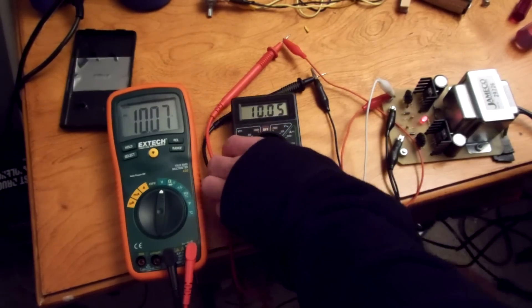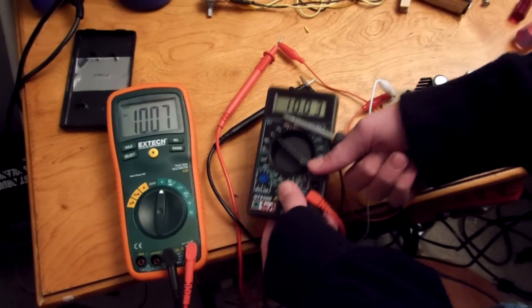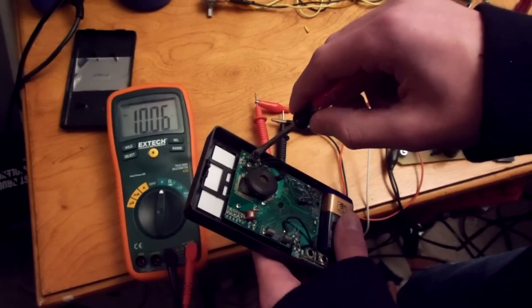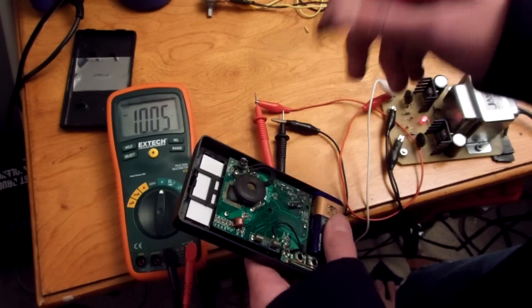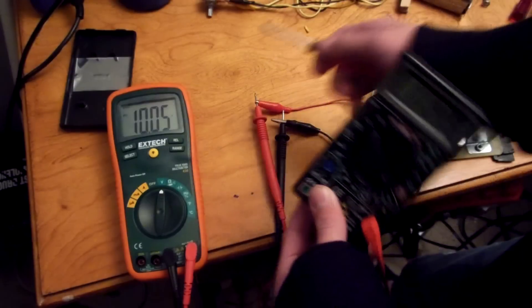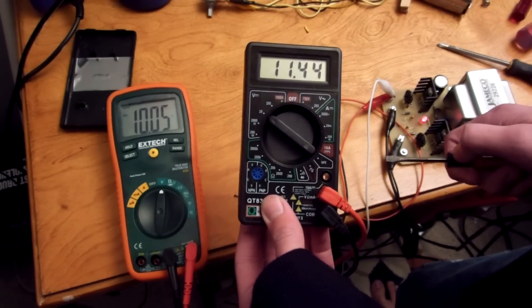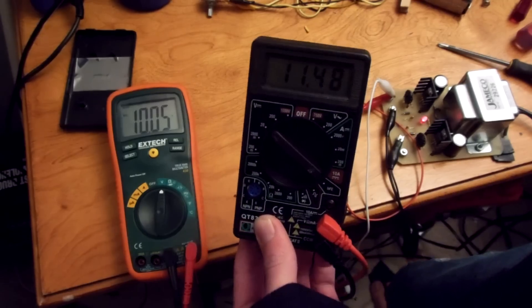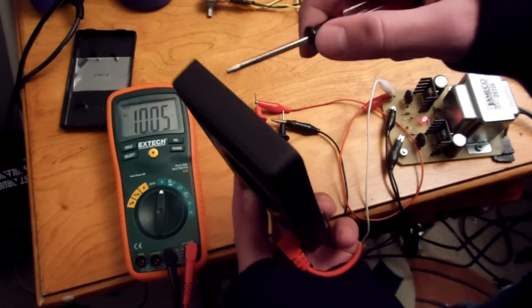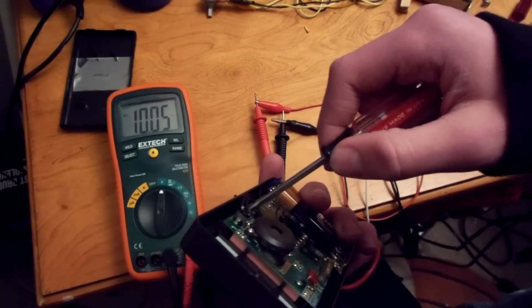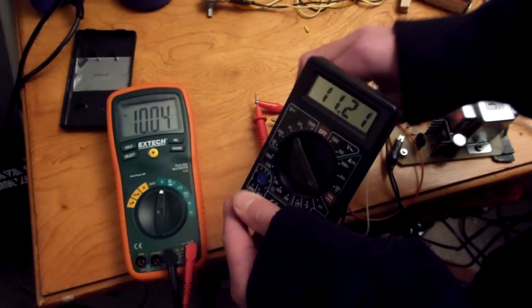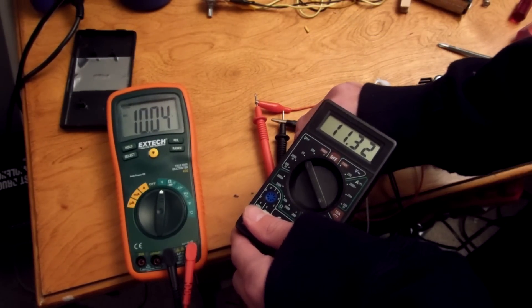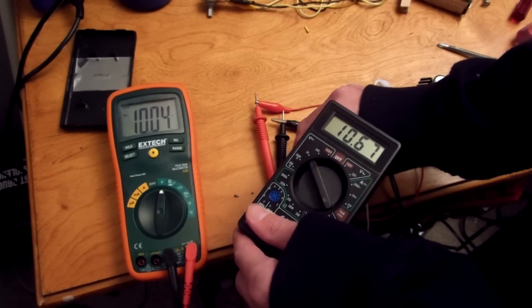I will skew the results just to show you how it works. On the back, there is a potentiometer, and I'm going to adjust it. I'm just going to screw it up just to see what we get. So we're getting 10 volts on the Extech. Now we're getting 11.3 something on this, and that is awful. That is well out of spec. So I take my screwdriver and I simply turn slowly.